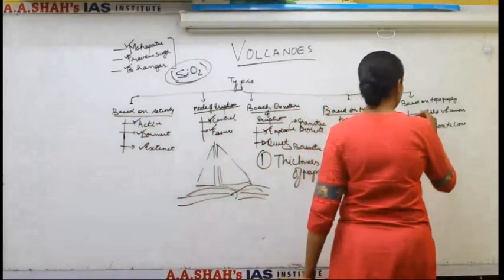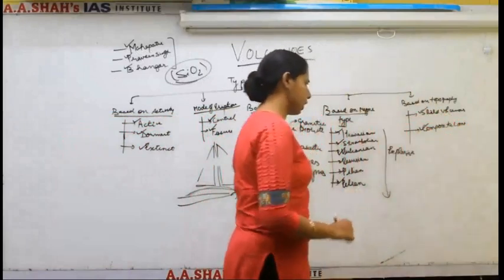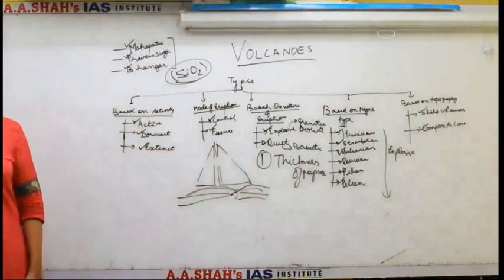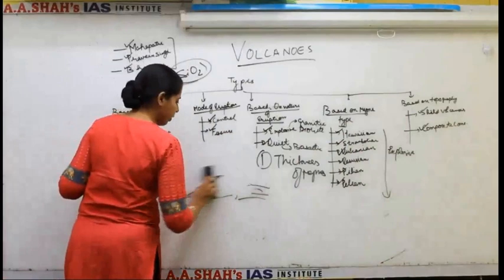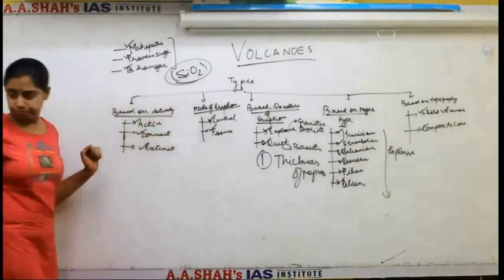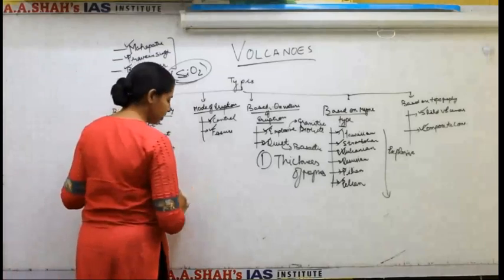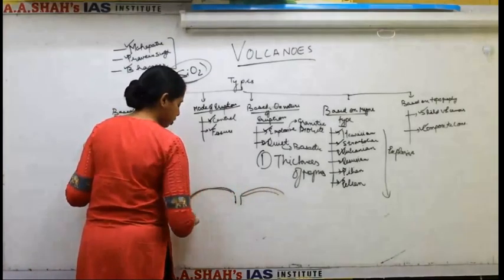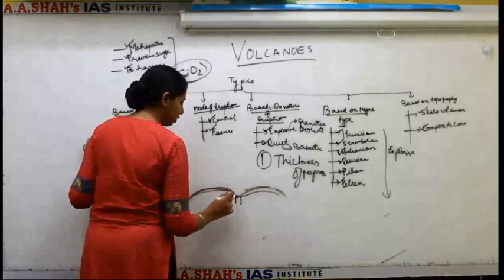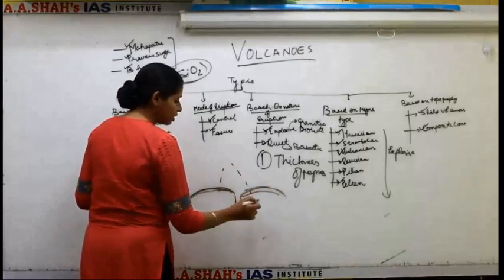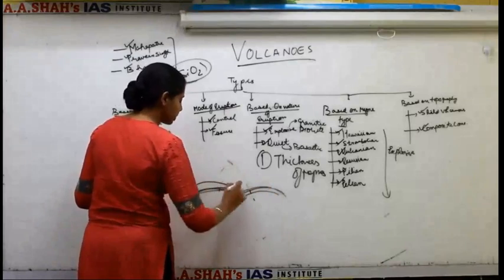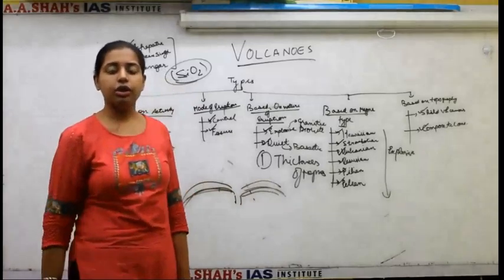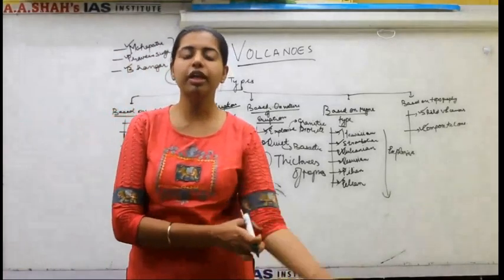Finally, based on topography, we study two types. One is shield volcano and the second is composite volcano. A shield volcano does not have a very conical structure. If the magma is very fluid, it can flow for a longer distance, so it will not immediately pile up and create steep slopes. It creates a more shield-like structure, and that is why it is called a shield volcano — made up of very fluid magmas.